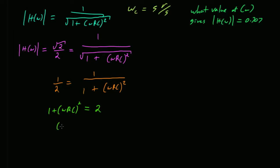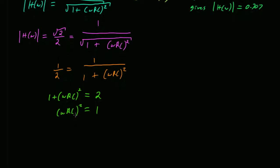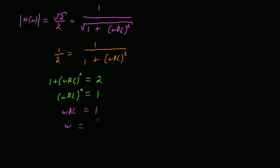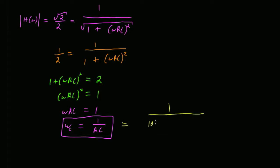Subtract 1 from both sides, leaving omega RC squared equals 1. Take the square root of both sides: omega RC equals 1. So the cutoff frequency is 1 over RC. If R is 1,000 and C is 200 microfarads—1,000 times a micro is a milli, that's 200 milli, which is 0.2—then 1 over 0.2 is 5 radians per second.